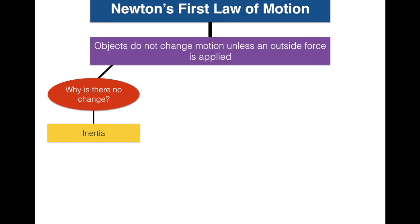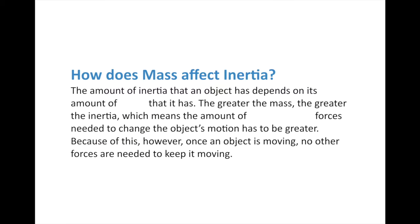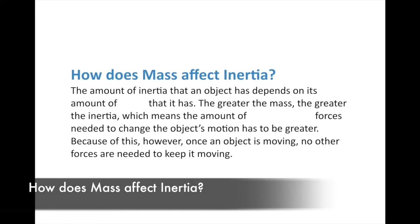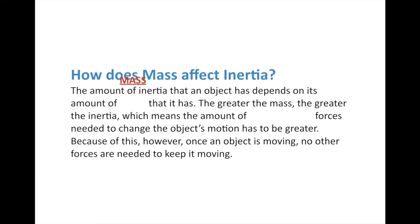Let's add more to our graphic organizer. Why is there no change in motion? Because of inertia — matter's tendency to resist change unless an outside force is applied. The amount of inertia an object has depends on the amount of mass it has. The greater the mass, the greater the inertia, which means a greater unbalanced force is needed to change that object's motion. That's why pushing something light is easy, but pushing something really heavy requires a large amount of force.